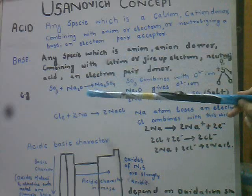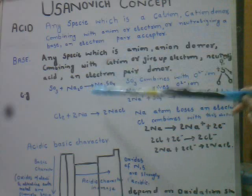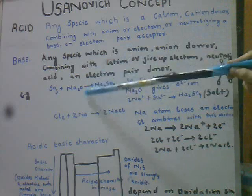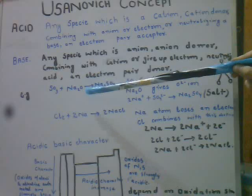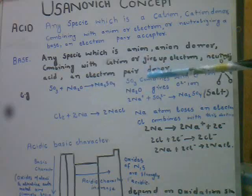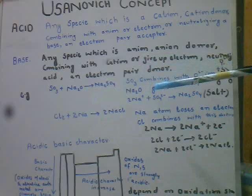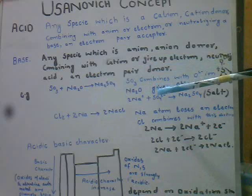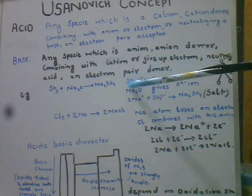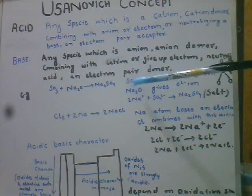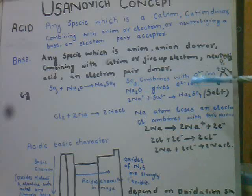Usangi concept ke mutabiq, woh substance jo electron pair donor hai use hum Base kehte hain. For example: Na2O hamare paas Base hai kyunki it gives up oxide ion. SO3, CO2, SO2 — yeh saare kya hain? Yeh Acid hain — yeh oxide anion lete hain.